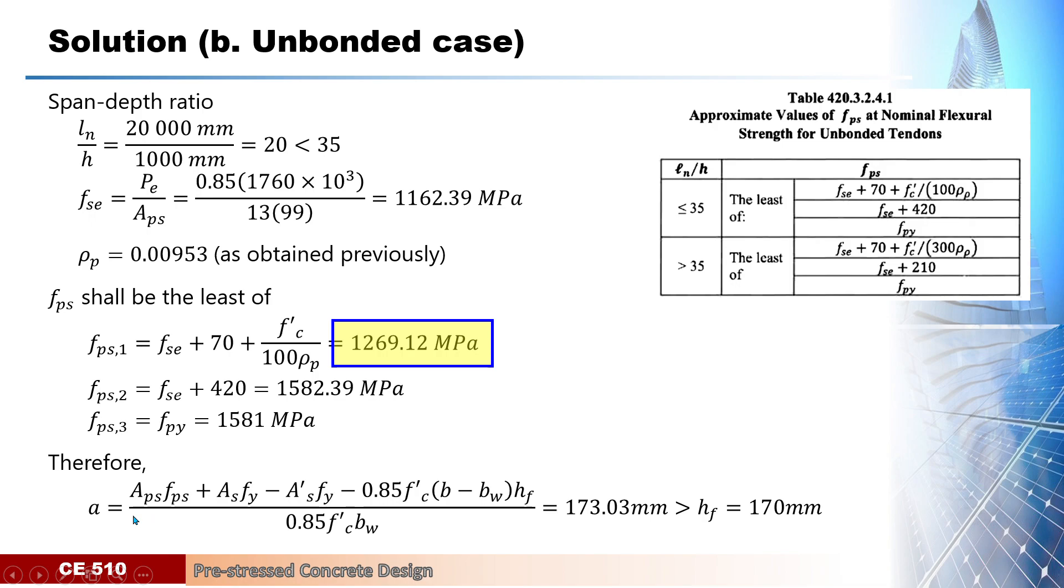We assume that this will be a flange section by this formula, the same as we did on the first part. Substituting values, especially FPS equals to 1269 and the other values will be the same as the previous, we got now the depth of the compression block as 173 millimeters, which is still considered as a flange section because it is greater than the average flange thickness of 170 millimeters.